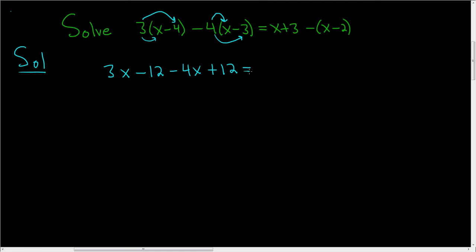We have equals x plus 3. There's really a negative 1 here, so we'll go ahead and distribute this as well. So negative x, and then negative and negative is positive, so plus 2.